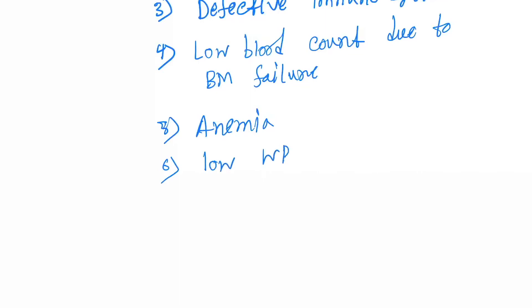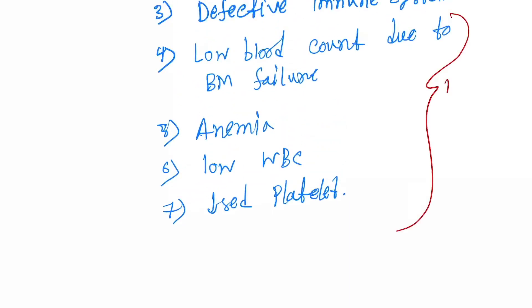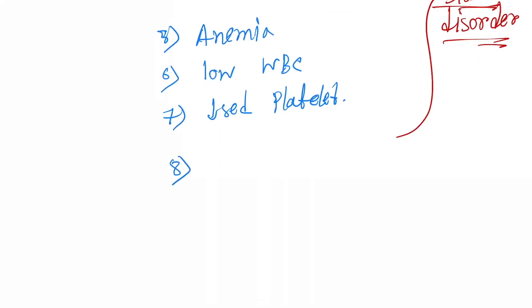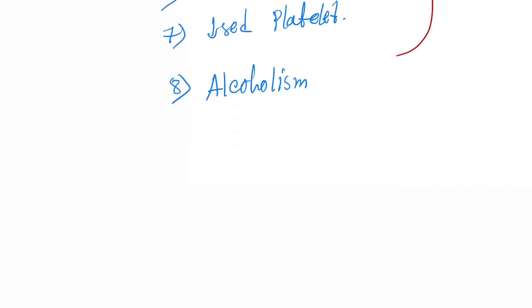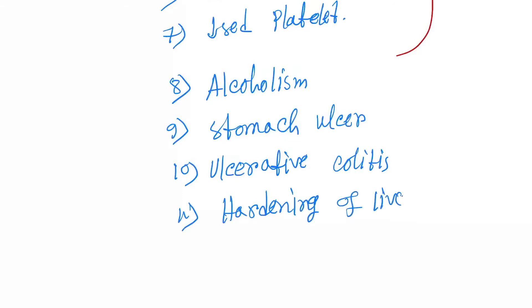Further contraindications include anemia, low WBC count, and decreased platelet count. If the patient has a blood disorder like these, the drug cannot be used. Also, alcoholism — especially if it has caused liver disease — is a contraindication, as is stomach ulcer and ulcerative colitis.